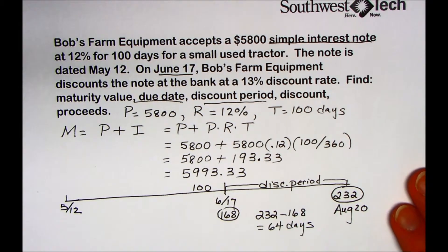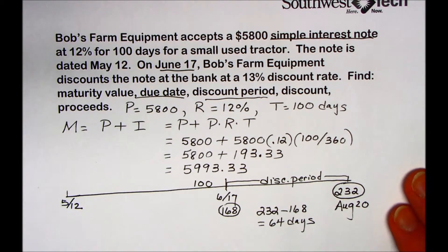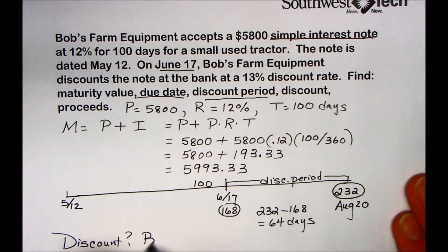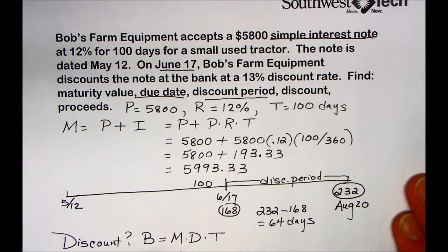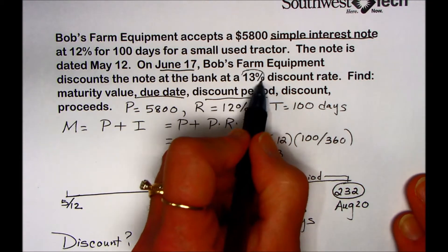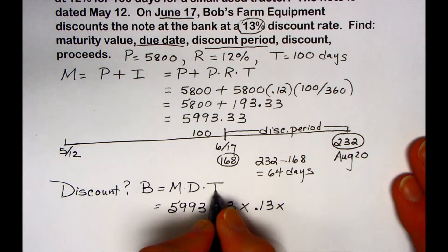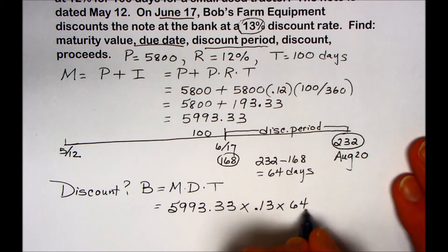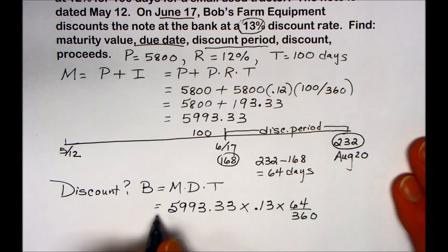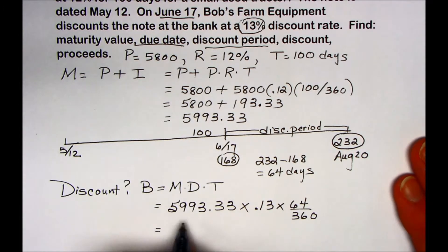The next question asks what's the discount — what will the bank charge Bob's Farm Equipment to take this loan? We're looking for the bank discount, so we're calculating B. To find bank discount, we take maturity value times discount rate times time. We calculated the maturity value in the first step. The bank is charging a 13% discount rate, so we use 0.13, and the time is the discount period — the remaining 64 days. Multiplying the values and dividing by 360 gives a bank discount of $138.51.